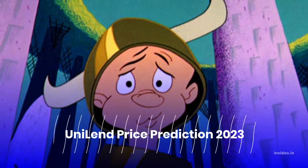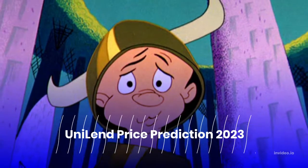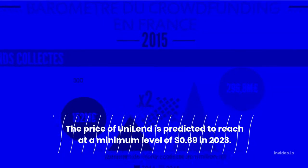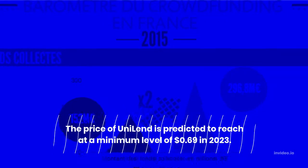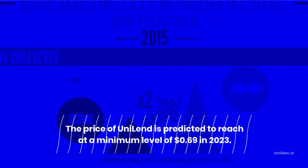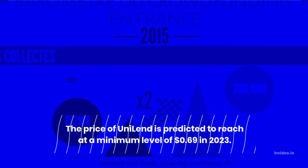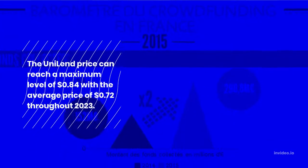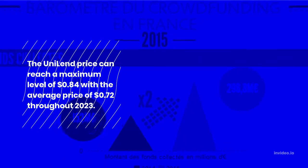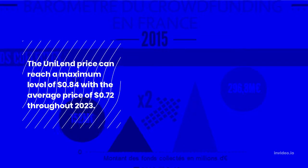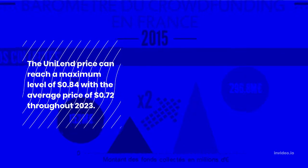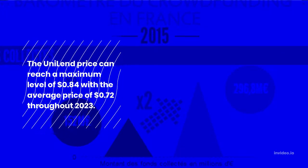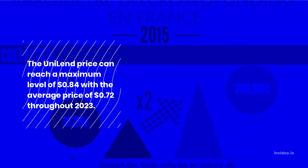Uniland Price Prediction 2023: The price of Uniland is predicted to reach a minimum level of $0.69 in 2023. The Uniland price can reach a maximum level of $0.84 with the average price of $0.72 throughout 2023.